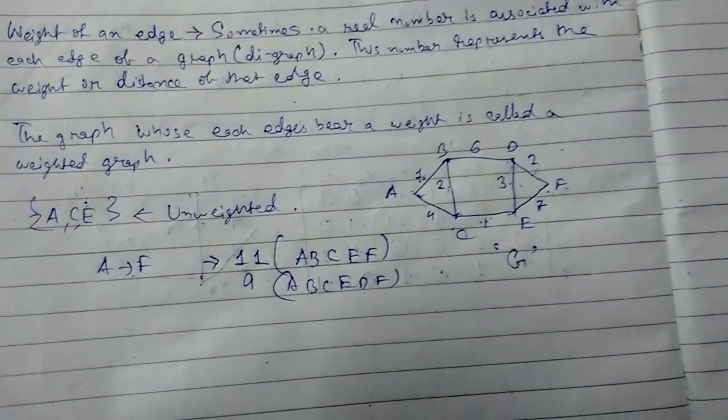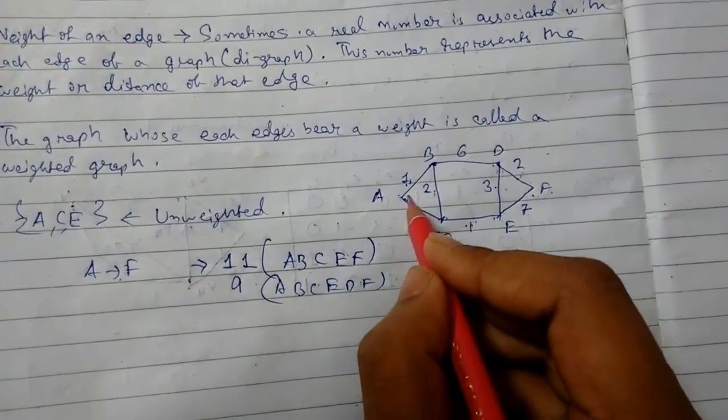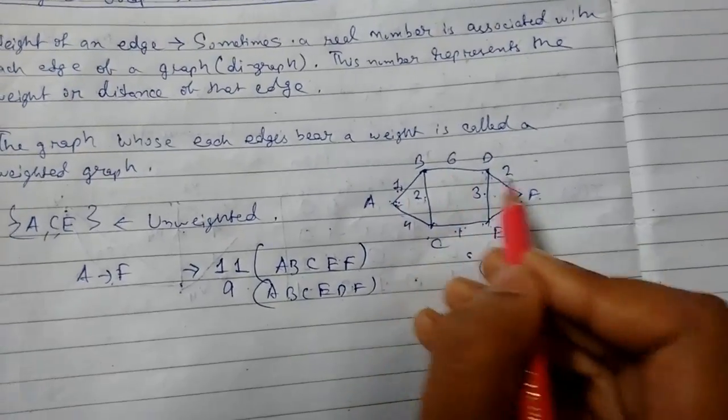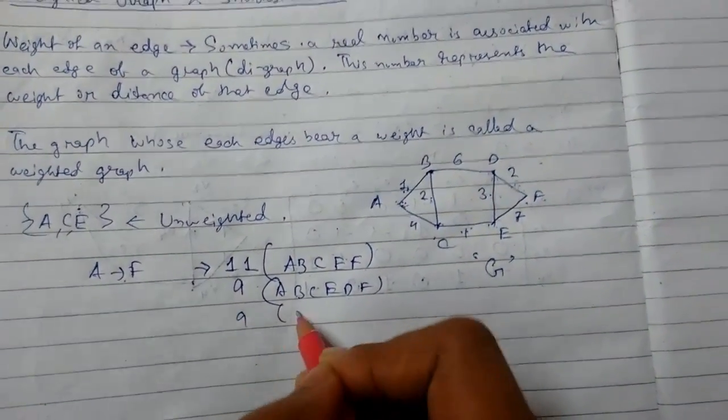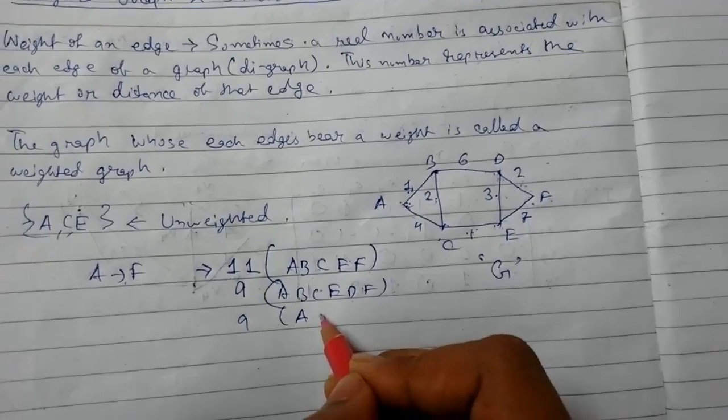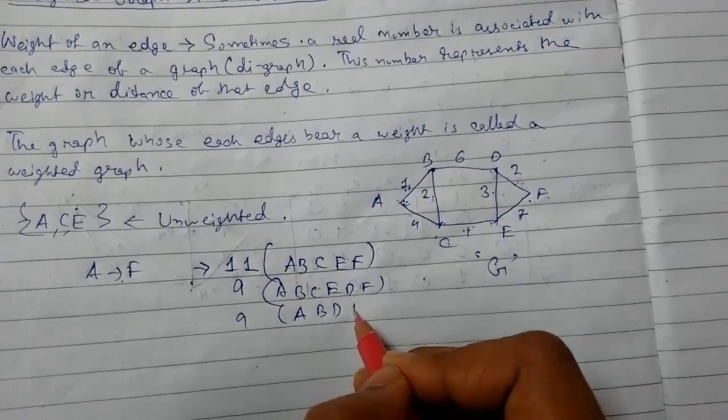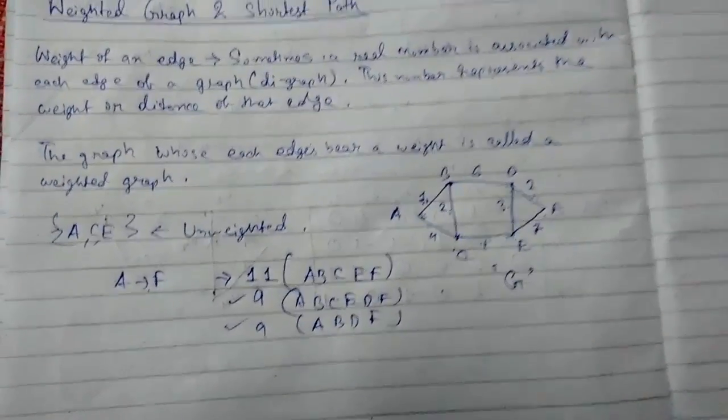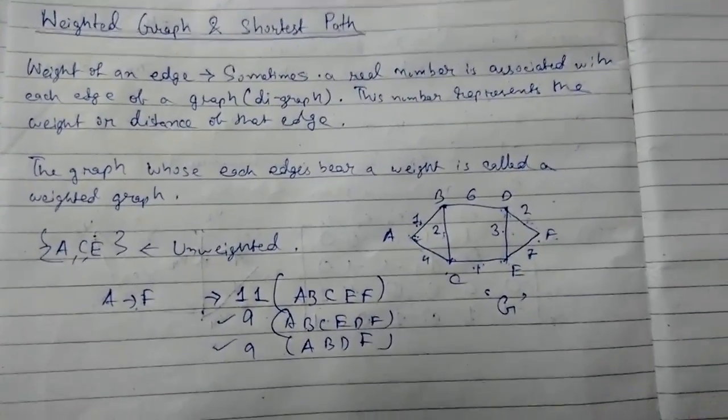Any other ways that will cost more? What about this? A-B-D-F. This will be 1, 7, and 9. This will also be 9. So these are the two minimum ways or shortest paths between two vertices.